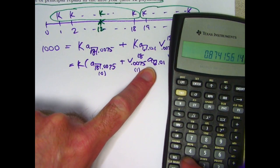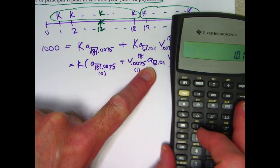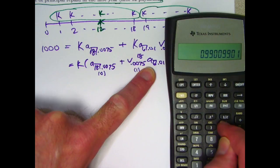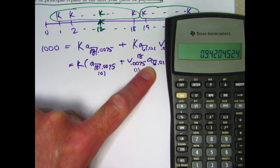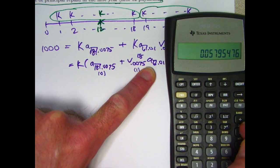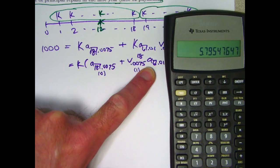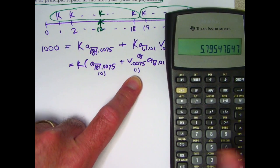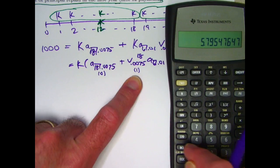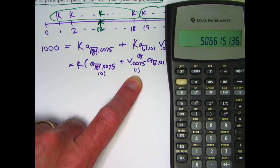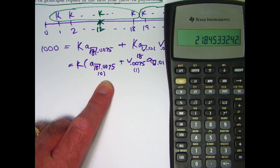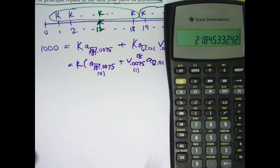This one will be 1.01, take the reciprocal, raised to the 6th power, subtract from 1, divide by 0.01. I won't bother storing that. I need to multiply it by what's in register 1. Now add on what's in register 0.